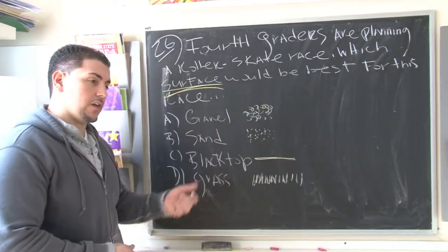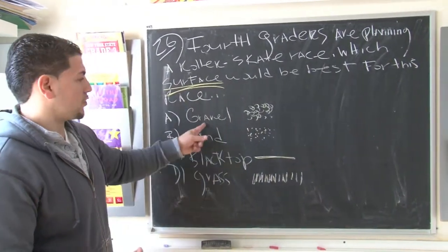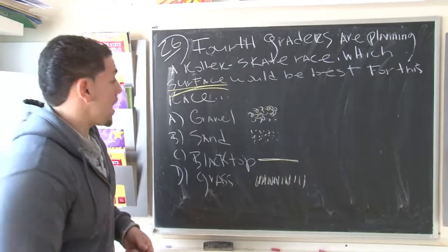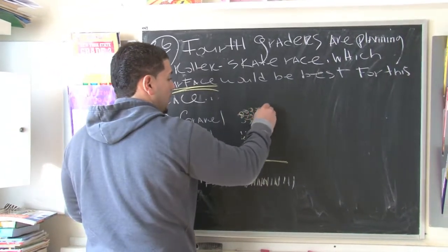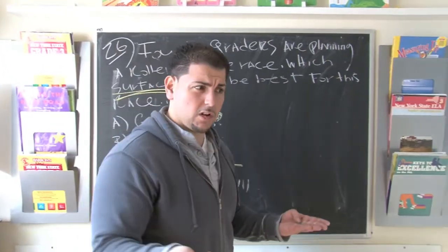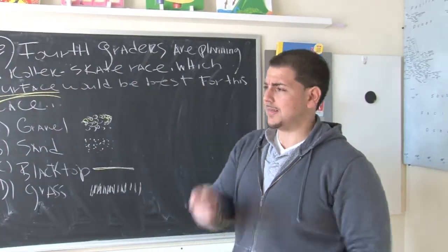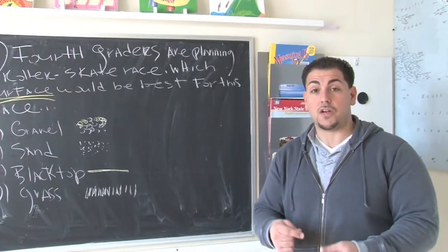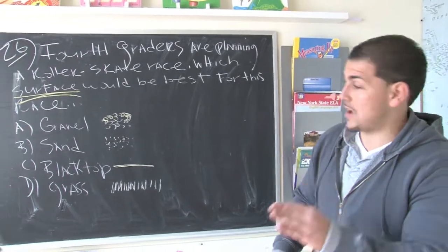The first choice they give us for what we want to have our race is gravel. Now if you know anything about gravel, gravel is like these little circles or these little pieces of rock. If you're thinking about roller skating, particularly using your roller blades, the last thing you want to do is skate downhill and have gravel because they may get caught and you may fall down. So gravel is out.